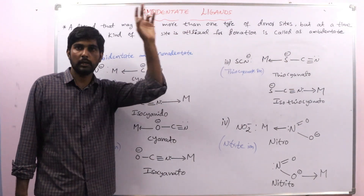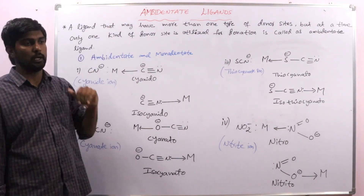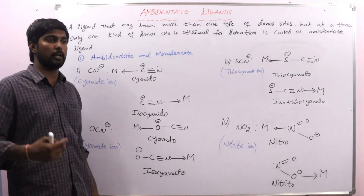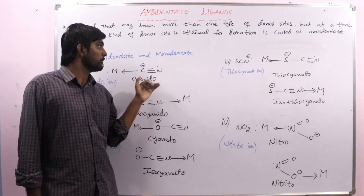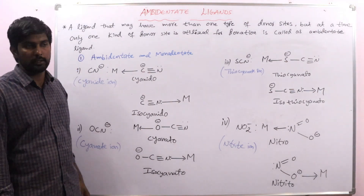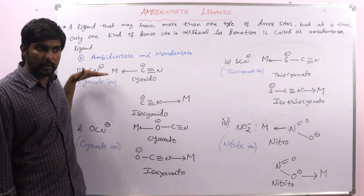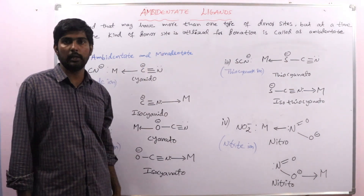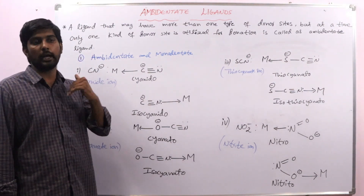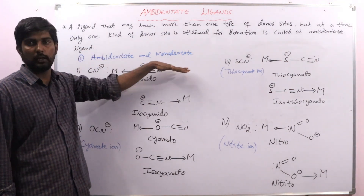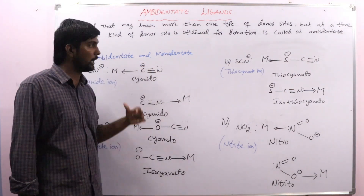Ambidentate ligands are generally of two types. One is ambidentate and monodentate, and another is ambidentate and bidentate. Ambidentate and monodentate means the ligand has only one donor atom. If that acts as an ambidentate ligand, it is called an ambidentate monodentate ligand. There are also ligands which have two donor atoms — bidentate ligands — which can act as ambidentate ligands.